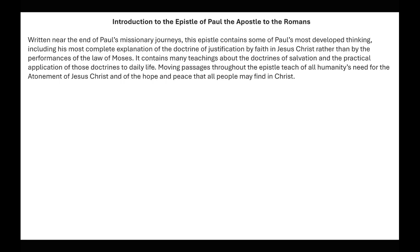It contains many teachings about the doctrines of salvation and the practical application of those doctrines to daily life. Moving passages throughout the epistle teach of all humanity's need for the atonement of Jesus Christ and the hope and peace that all people may find in Christ. That's what the law of Moses was meant to do — to teach hope, peace, and salvation in Christ. Unfortunately, by the time of Christ, Israel had apostatized so much that they believed salvation came through the law of Moses.